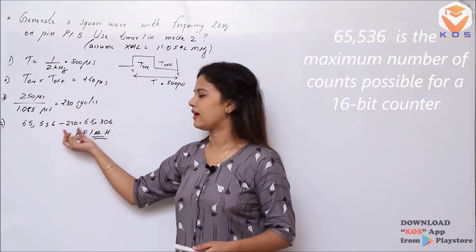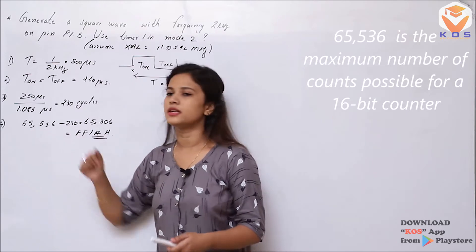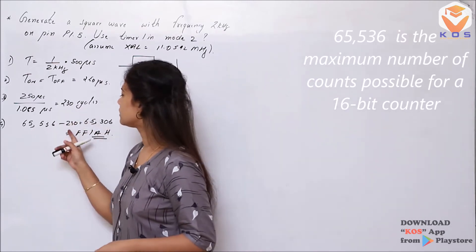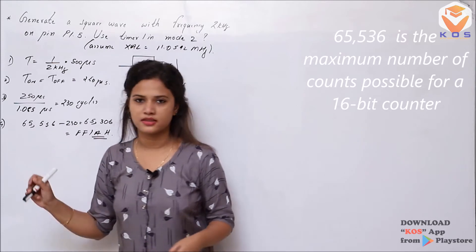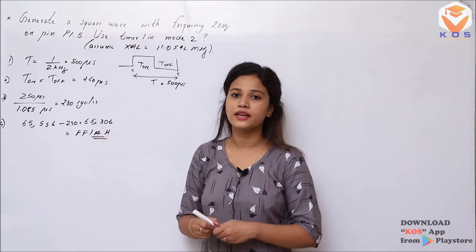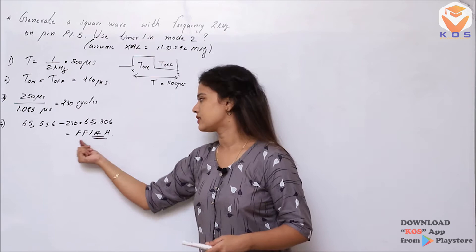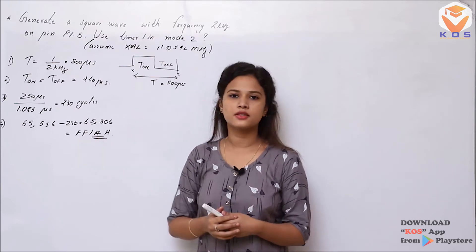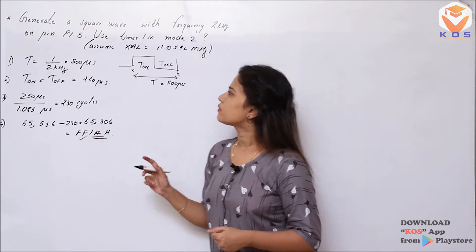We subtract the value from 65,536. The result is 65,306 — that is the decimal value. Converting to hexadecimal gives us FFE1H.